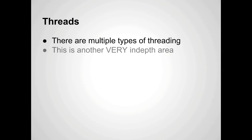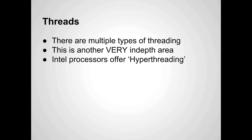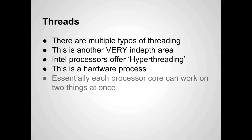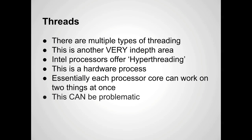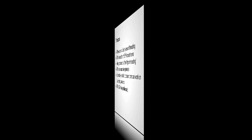There are multiple types of threading, and this is a very in-depth area. Intel processors offer something called hyper-threading. It's a hardware process where, as the processor is going through instructions, it'll be processing one instruction, set it aside, and start working on another one. Essentially, each processor core can work on two things at once. It can be problematic if two processes are looking at the same resource, but Intel has done a really good job of coding for that, so it doesn't really come up anymore.